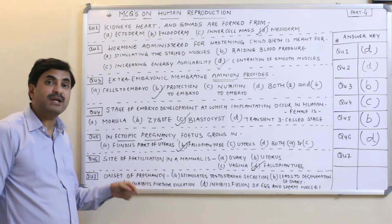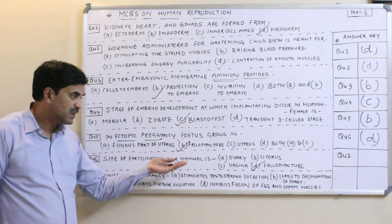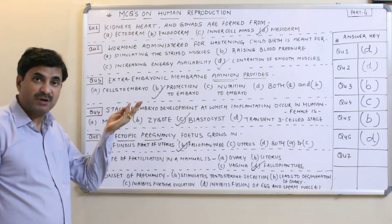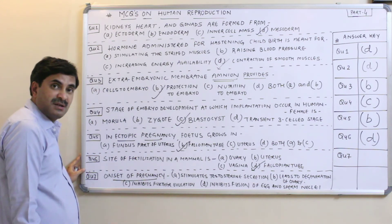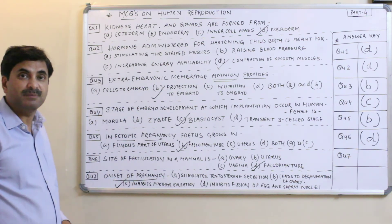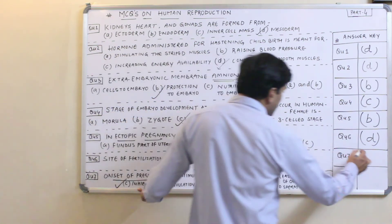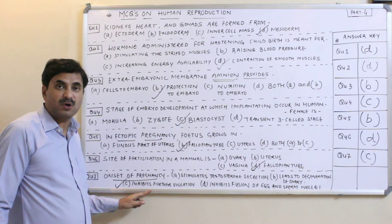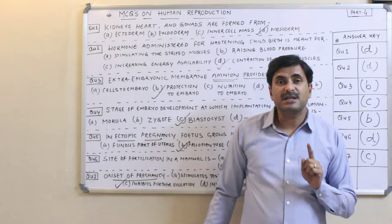Question number seven: onset of pregnancy — what does it do? It does not stimulate testosterone secretion, nor does it lead to degeneration of the ovary. With the onset of pregnancy, it inhibits further ovulation — the menstrual cycle stops, and no ovum is released. Question number seven answer is C. These were very important questions based on human reproduction for the NEET examination. Thanks a lot.